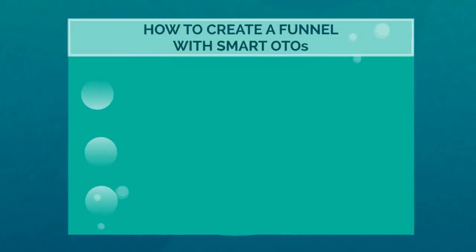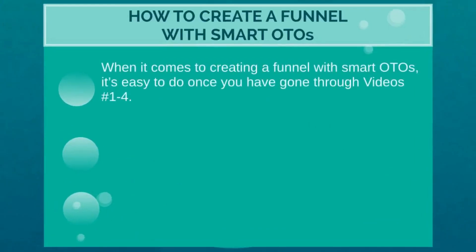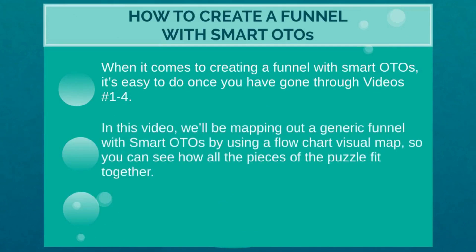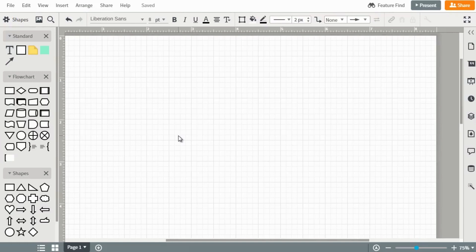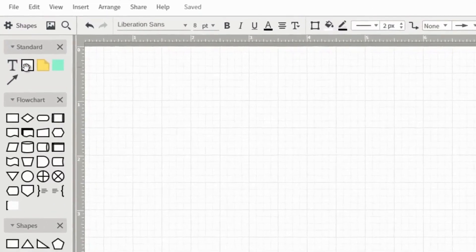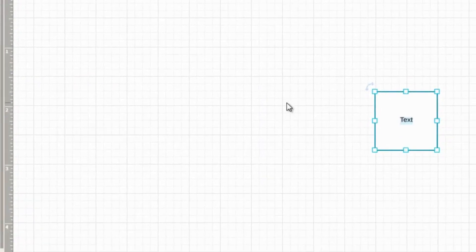If it doesn't quite make sense yet, don't worry — we'll map it out visually in the next video. That should get your mind going. Let's move on to video number five where I'll map it out so you can visually see it. Welcome to video number five. We're going to talk about how to create a funnel with smart one-time offers. It's super easy to do as long as you've gone through videos one through four — make sure you go in order.